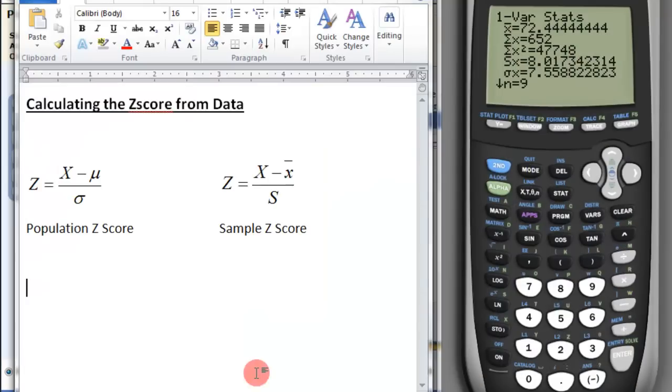Here's the formula. The z-score for the population is x minus μ over σ. If it's a sample, then you have x minus the mean over s, which is the sample standard deviation. But we're using the population formula, so that's the information we're going to use.